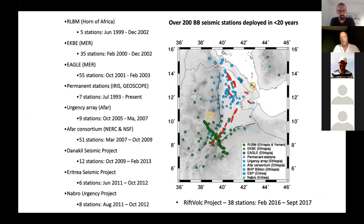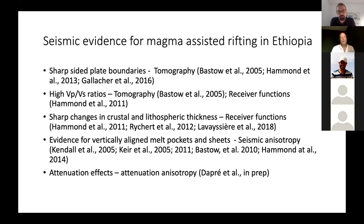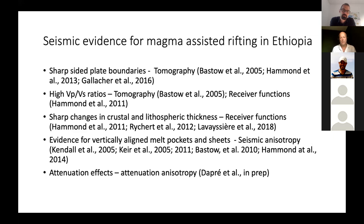Going back to the nineties, there were effectively just two seismic stations in the Horn of Africa: one in Djibouti, a geoscope station, and one near Addis Ababa. Since then, well over 200 stations have been deployed throughout the entire region, which has really changed our view of what this region is like. Tomography has given us unprecedented images of the mantle showing really sharp-sided plate boundaries. We see evidence for very high VP/VS ratios that can only be explained by melt, from both tomography and receiver functions, along with very sharp changes in crustal and lithospheric structure and evidence for aligned melt pockets manifest as strong seismic anisotropy.